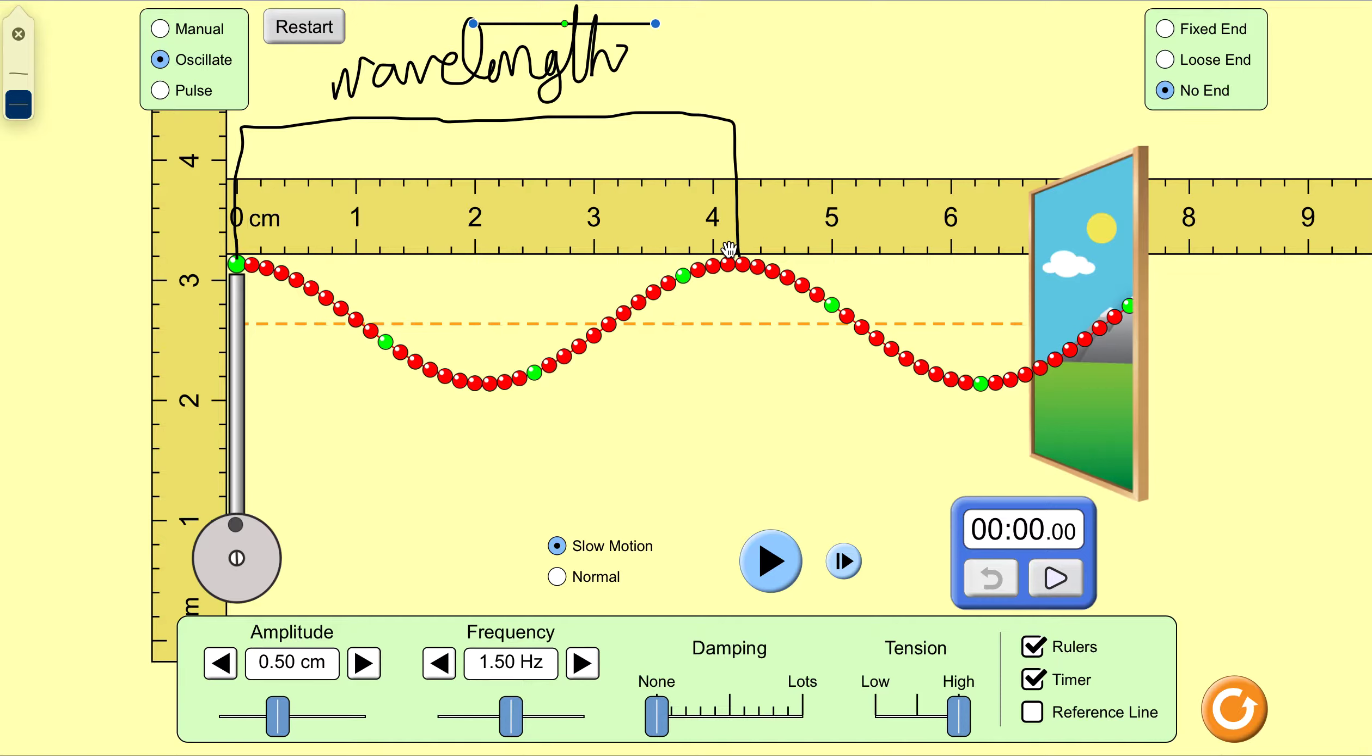Notice this ruler is not divided up in very convenient ways. It's got 3, 3.2, 3.4, 3.6, 3.8, 4, 4.2, and so on. It doesn't go to 3 and 3.5 which would be a normal way to mark out a ruler.